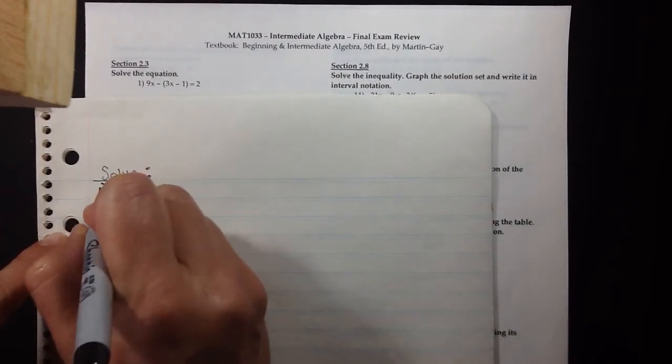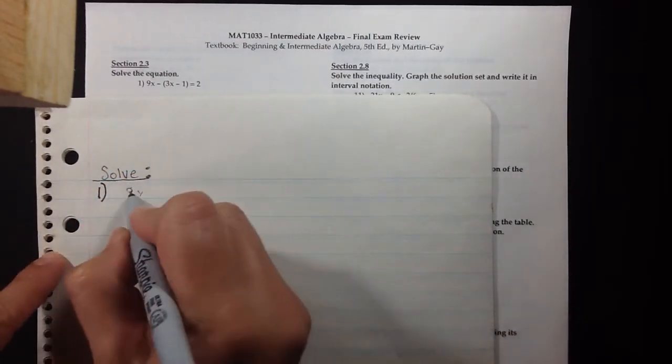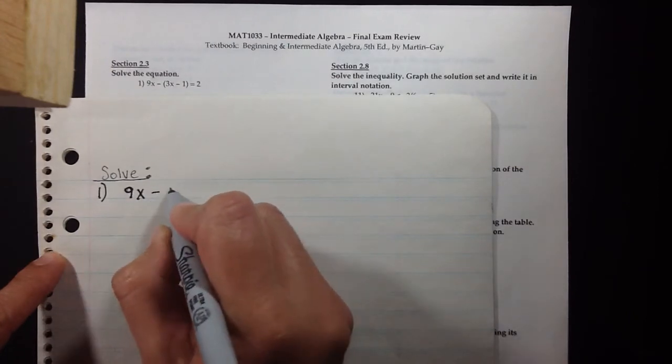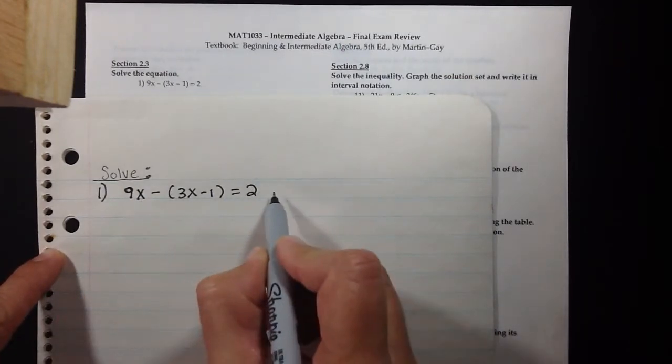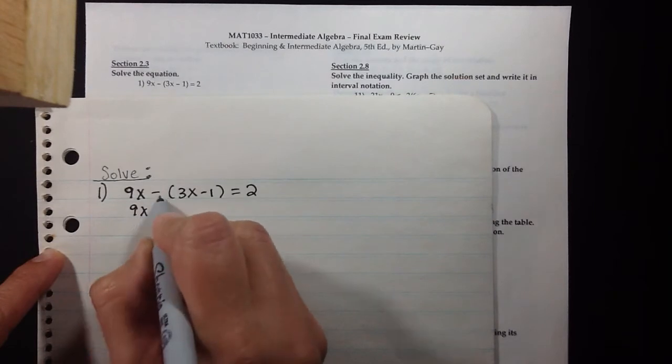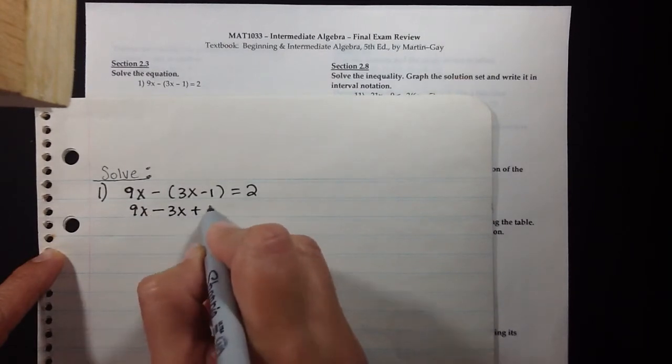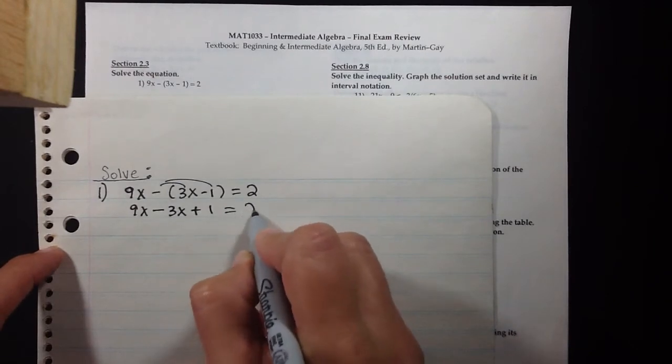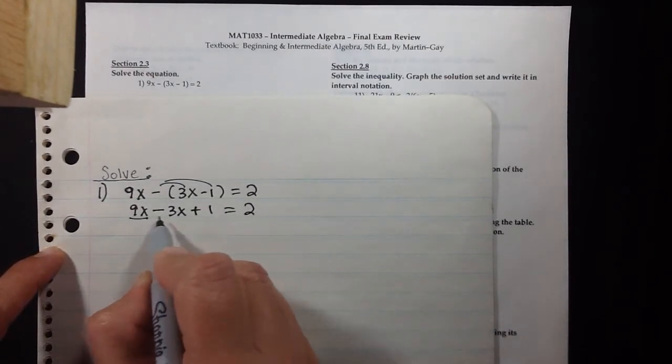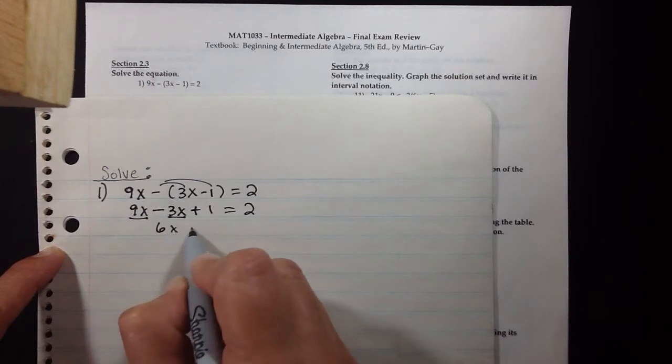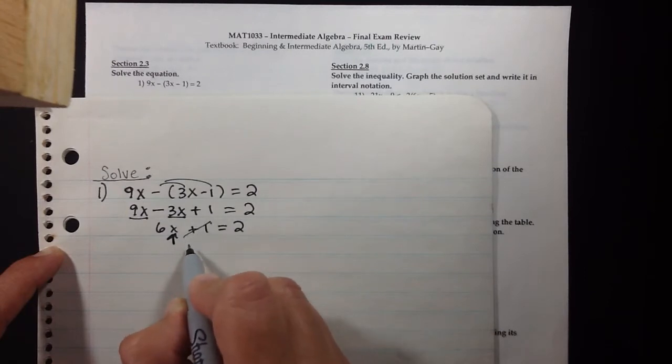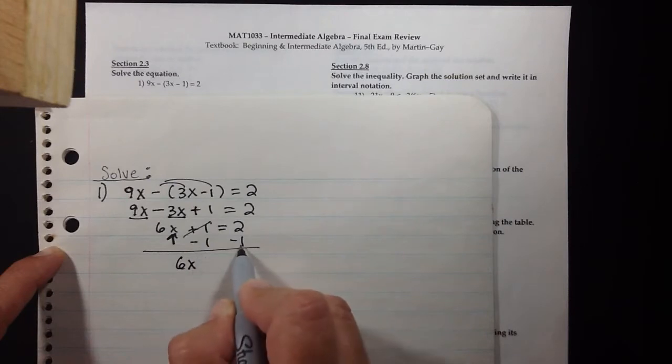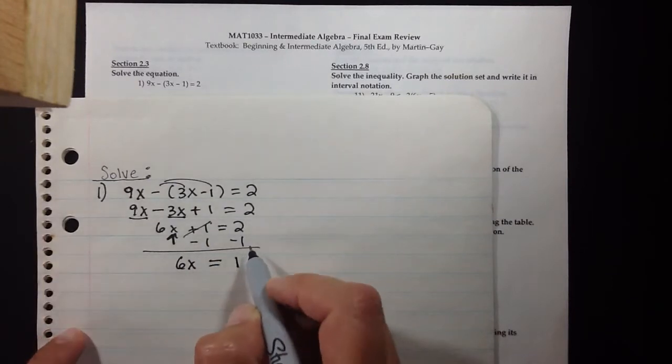The first problem is a solve, and the problem just has x's to the first power. We'll first simplify the left side by distributing the minus sign to both terms in the parentheses. We'll continue to simplify by putting the like terms together, and then we will isolate the x term by getting rid of the plus one by subtracting one.